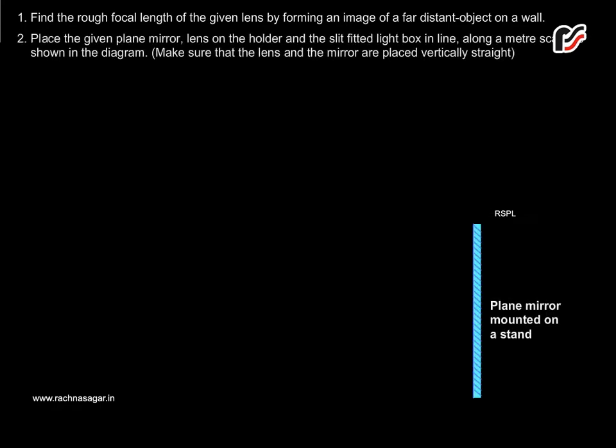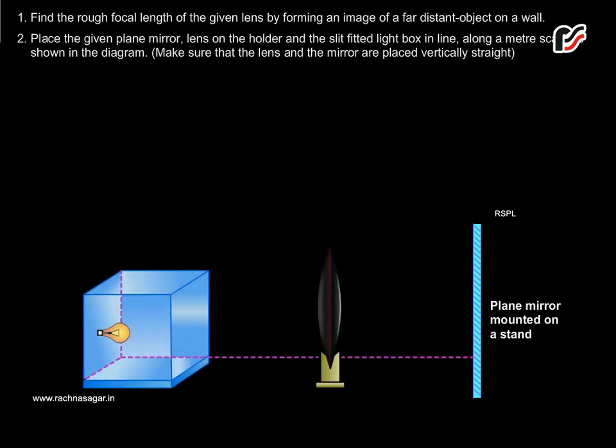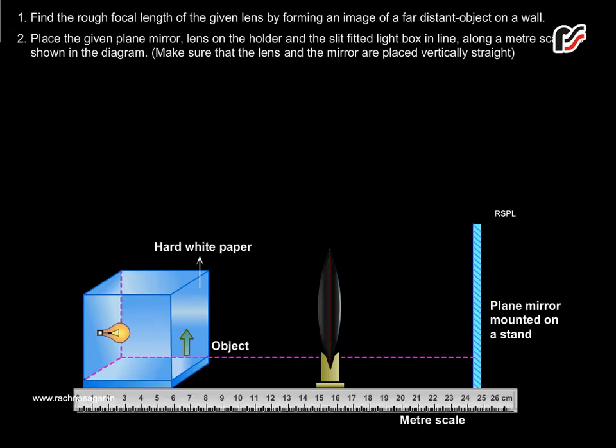Place the given plane mirror and lens on the holder and the slit fitted light box in line along a meter scale as shown in the diagram. Make sure that the lens and the mirror are placed vertically straight.